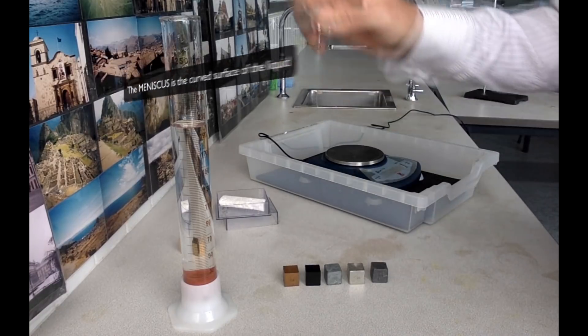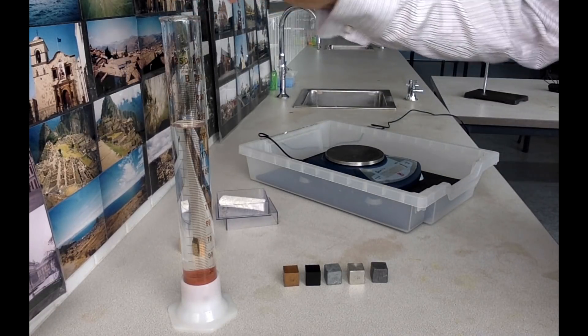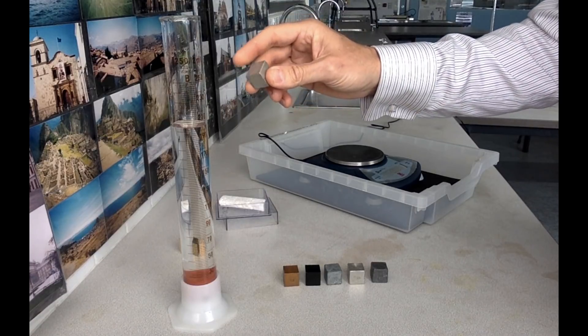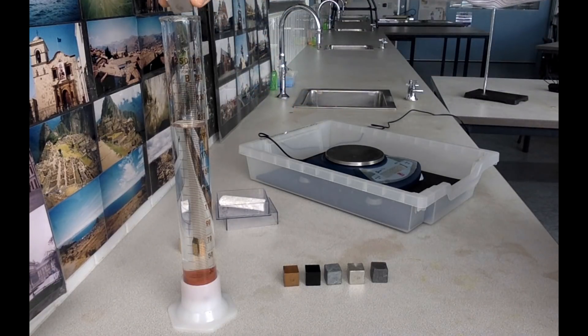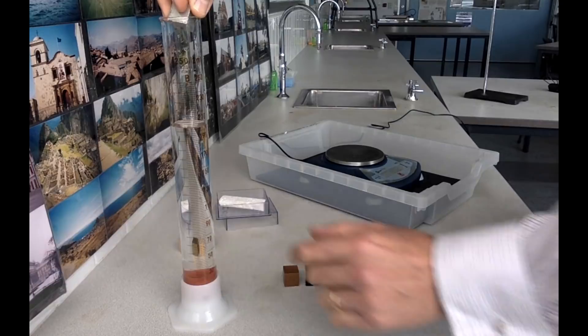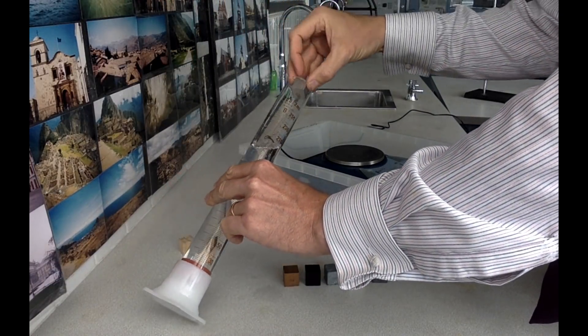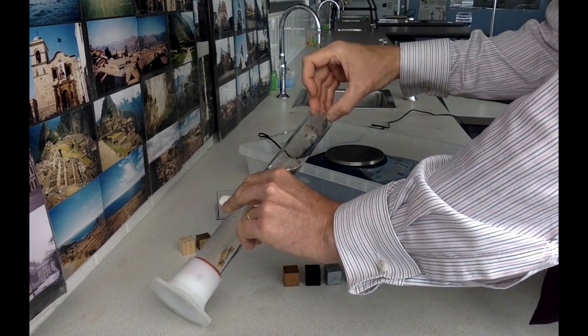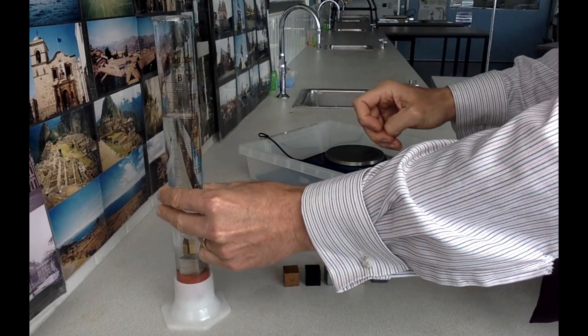Now you want to drop your metal in there, but you don't want to allow water to escape by splashing. So if possible, you want to lower it in as gently as you can and rather than dropping it from the top, maybe let it slide in slowly like so.